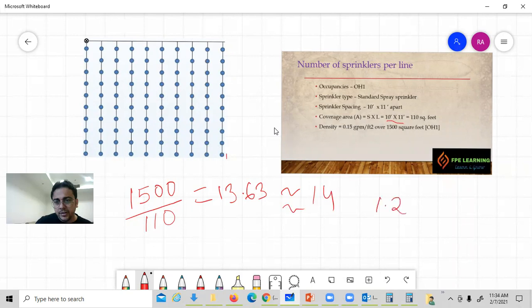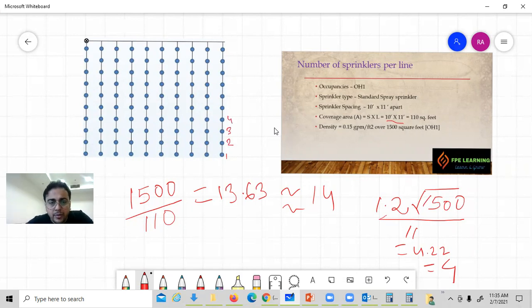With this formula, the maximum distance over 11 feet spacing between sprinklers is 4.22. So maximum number of sprinklers required, we will consider 4. We will start from here. This is our node number one, node number two, three, and four.